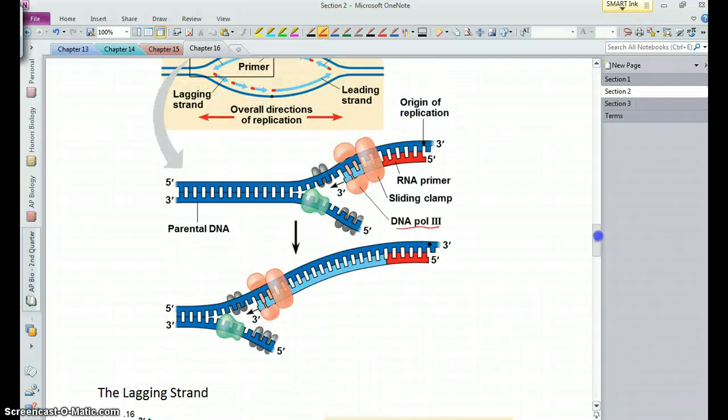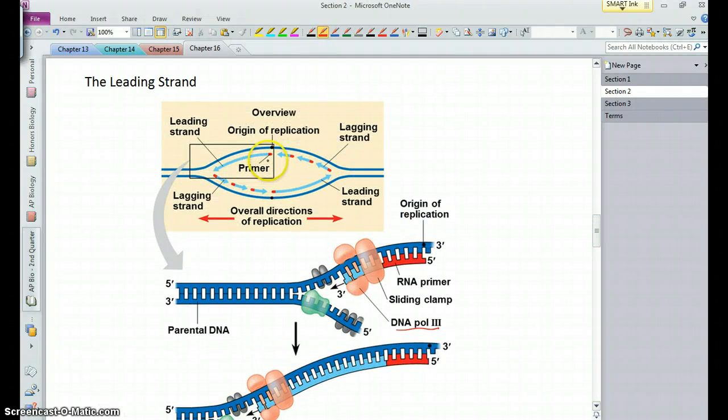Now, you'll notice up here in our DNA, where our origin of replication is, we have this little fork here. And this is called the replication fork. And you'll notice on one side, replication is occurring towards the replication fork. And on the other side, it goes away from the replication fork.